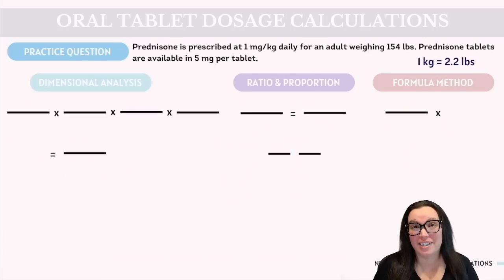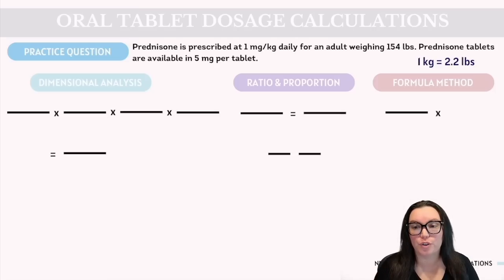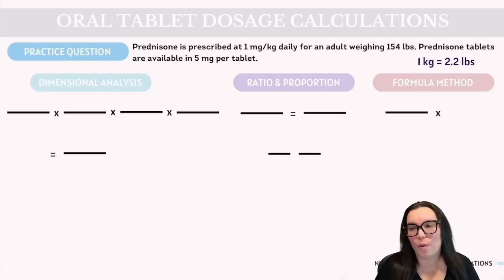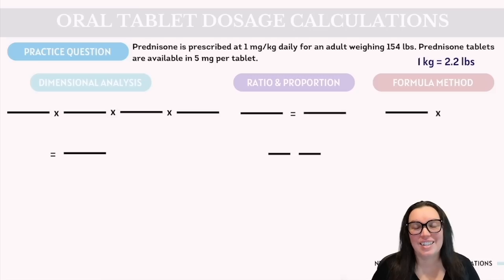In our last practice question, we're going to be converting body weight. Prednisone is prescribed at 1 milligram per kilogram daily for an adult weighing 154 pounds. Prednisone tablets are available in 5 milligrams per tablet.